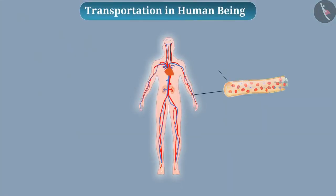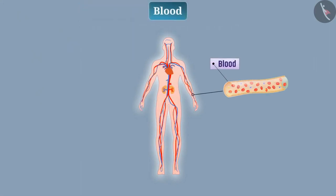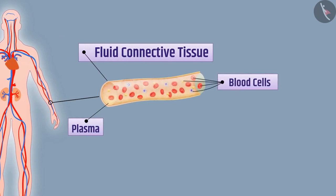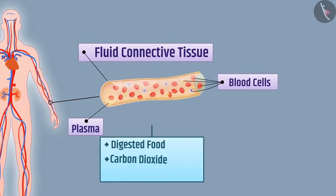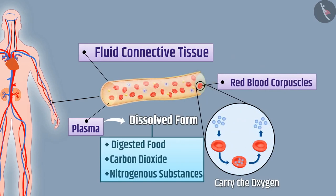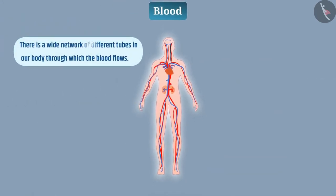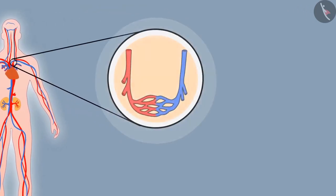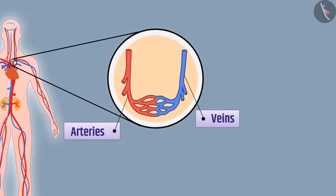Blood carries out transportation in humans. Blood is a fluid connective tissue made up of plasma and blood cells. Plasma carries digested food, carbon dioxide, nitrogenous substances and other hazardous substances in dissolved form, while red blood corpuscles carry oxygen. There is a wide network of different tubes in our body through which blood flows, called blood vessels. There are three types of blood vessels: arteries, veins and capillaries.